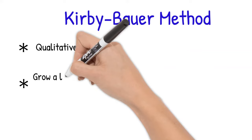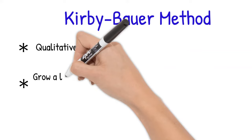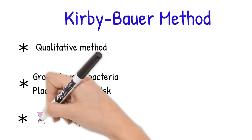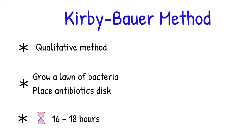Kirby-Bauer test is a qualitative method. It is done by growing a lawn of bacteria with antibiotics. This allows the bacteria to grow for about 16 to 18 hours depending on how fast your bacteria grow.